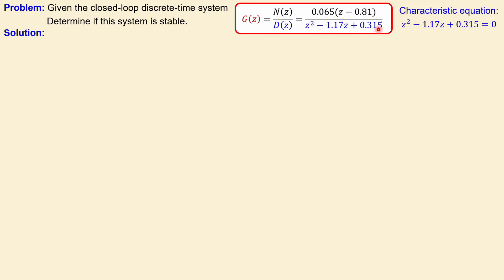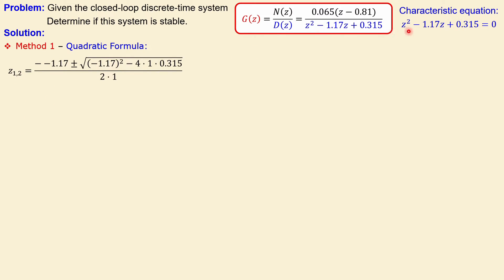Let's work this out step by step. First, recognize the characteristic equation D(z) set equal to zero. Since this is a second order system, several methods apply. For Method 1, we use the quadratic formula: take the negative of the coefficient before z, plus or minus the square root of that coefficient squared minus four times the coefficient of z-squared times the constant.